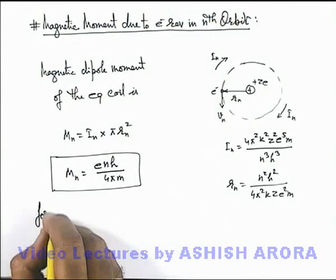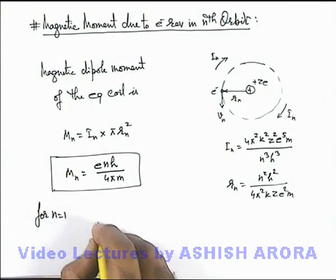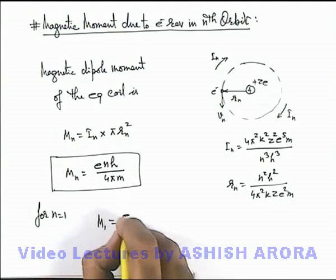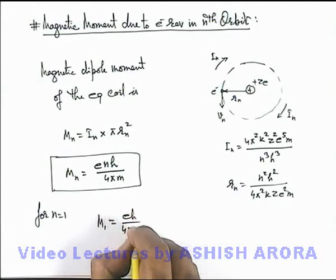And here also for n equals to 1, that is for the first orbit, if we calculate m-1 it is e h over 4 pi m.